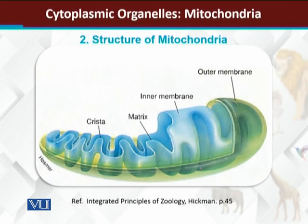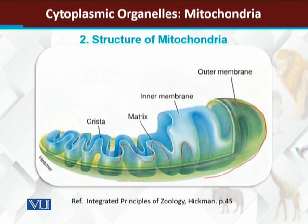Looking at the diagram of mitochondria: this is the outer membrane, which is smooth in appearance. The inner membrane below it is highly folded. The space between the outer and inner membranes is called the inter-membrane space. The inner membrane is forming finger-like projections.